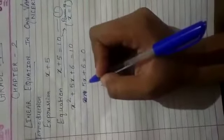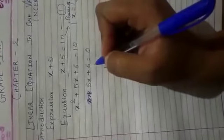So if I will write it like this, 5x plus 6 equal to 0, that is called linear equation. Now linear equation we have to solve.